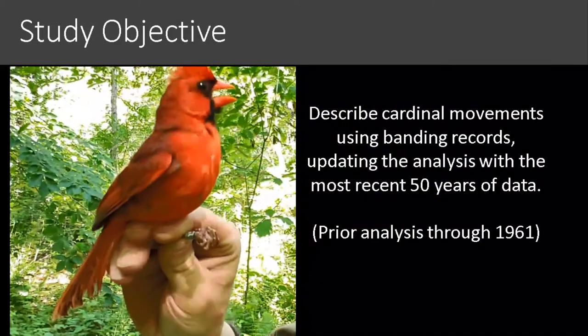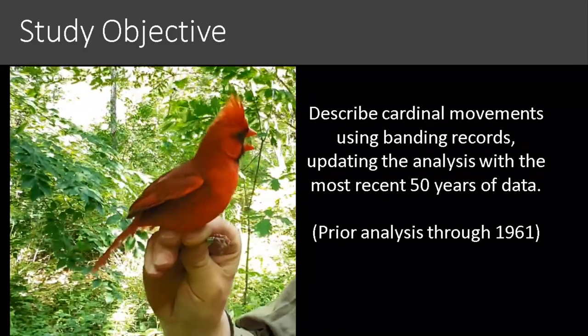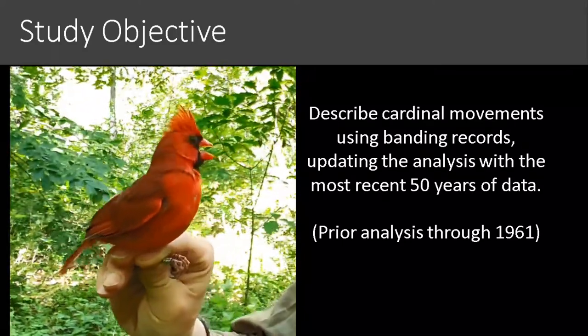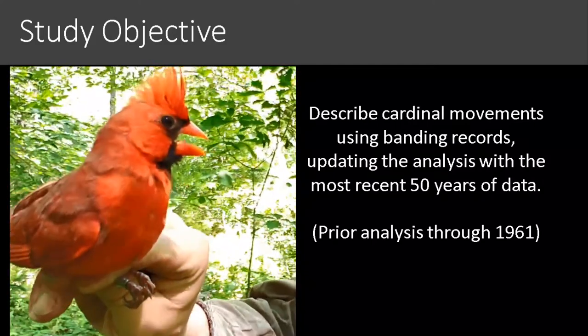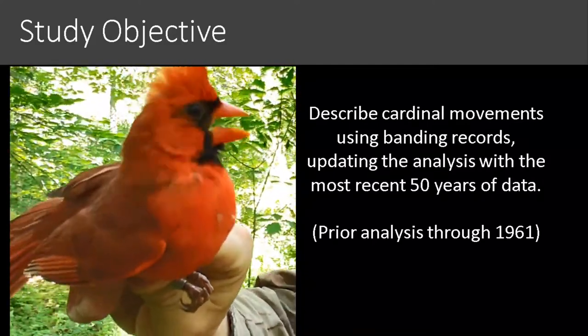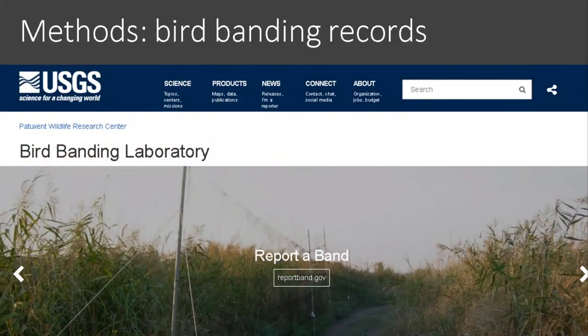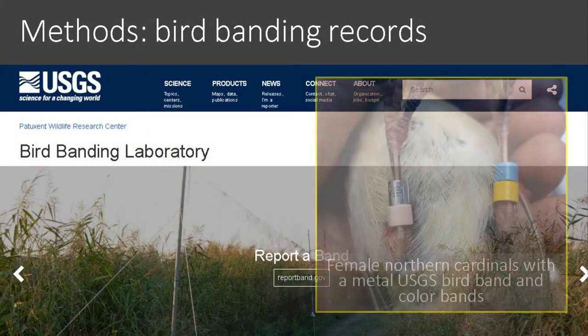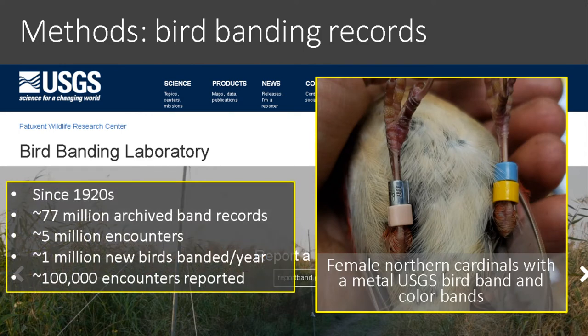The objective of this project was to describe cardinal movements using Bird Banding Lab records. Specifically, I wanted to update this analysis with the most recent 50 years of data, since the most recent prior analysis only ran through 1961. The Bird Banding Lab is responsible for banding across the United States using federal bird bands with unique identifiers. In the last hundred years, over 77 million birds have been banded and archived, with about five million encounters, and roughly one million birds banded and 100,000 encounters reported each year.